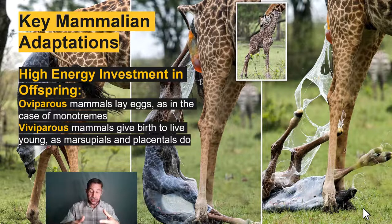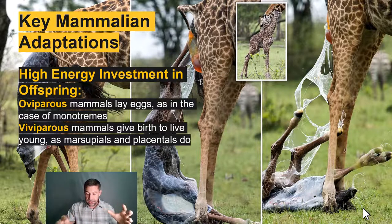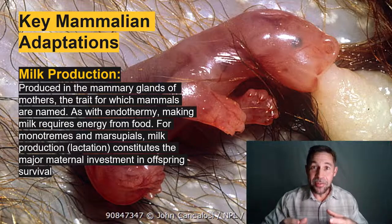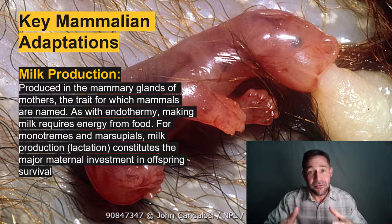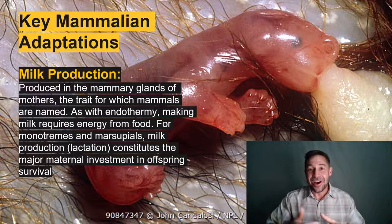Viviparity has evolved in the marsupials, which have altricial or relatively undeveloped young, as well as the placentals, which have precocial or well-developed young. In both cases, females give birth to live young, like these very real photos of a giraffe birth. Female mammals produce a wondrous, highly nutritious, high-caloric, high-fat liquid known as milk in their mammary glands. 'Mammary,' 'mammal' — it's the namesake of mammals.